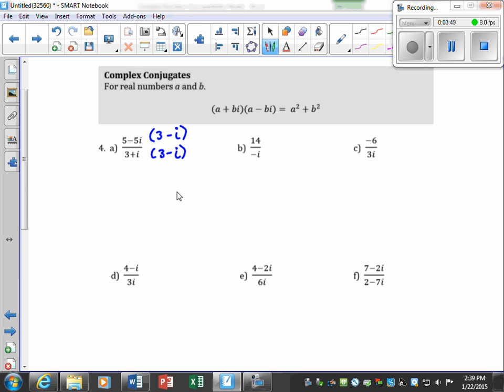Okay, now up here, we're going to have a binomial times a binomial, which means to FOIL. 5 times 3 is 15, minus 5i. Then we come back under here, minus 5i times 3 is negative 15i, and then a negative times a negative is a positive 5i squared.